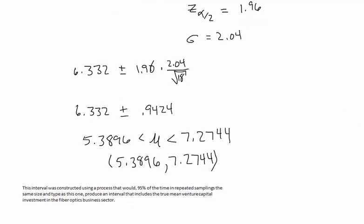We're going to say that this interval was constructed using a process that would 95% of the time in repeated samplings the same size and type as this one produce an interval that includes the true mean venture capital investment in the fiber optics business sector. And that's our video on confidence intervals for a mean with a known sigma.